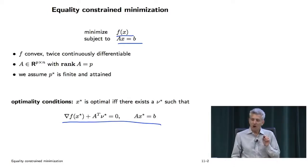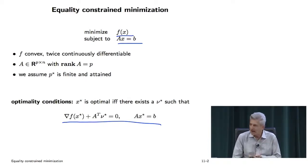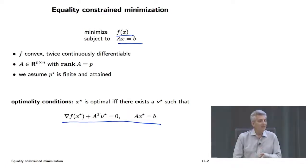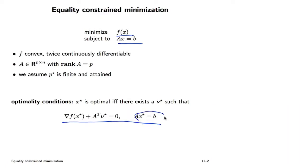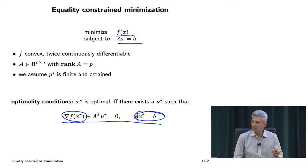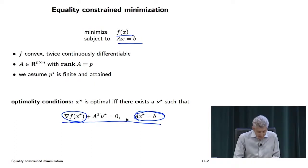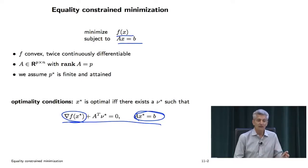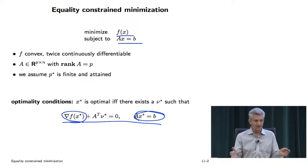Interestingly, these equations are affine in nu-star — they're not nonlinear in nu-star, they're affine. Now, what are they in x? Well, that depends. Except for one case: when is the gradient of a function an affine function? When it's quadratic. So if the function is quadratic, these are a set of linear equations. That says that solving linearly constrained quadratic optimization problems is pure linear algebra — you just set up a linear algebra problem and solve it. But in general, if f is non-quadratic, this is non-affine, and that's a set of nonlinear equations.